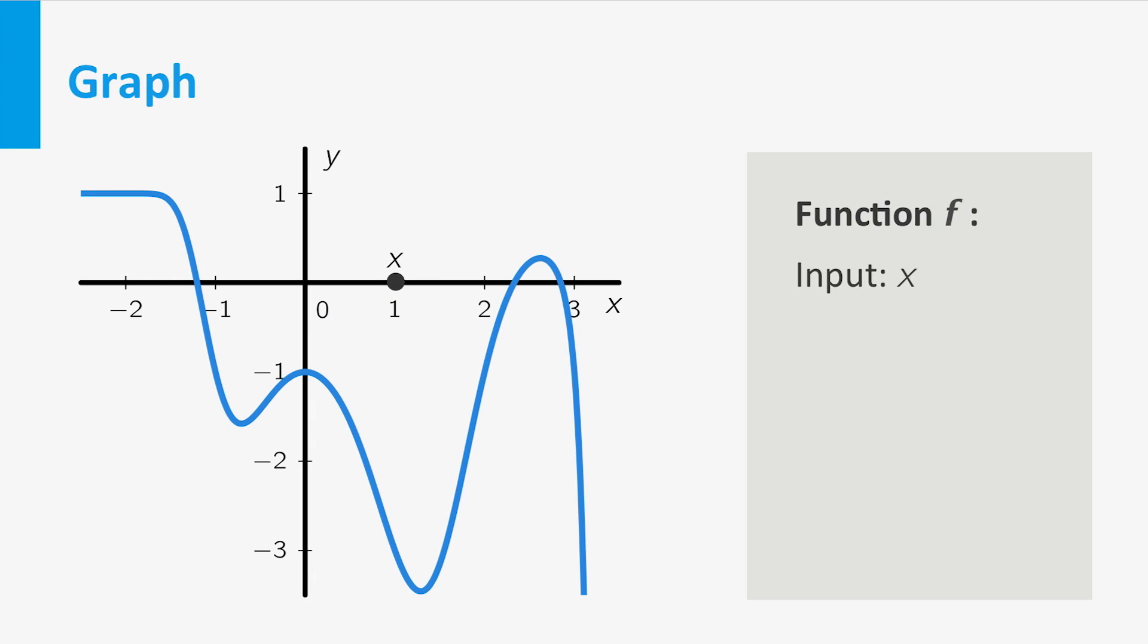The points on the horizontal axis represent the input values. If you pick one, then the corresponding output value is the vertical displacement from that point to the graph. For example, we see from the graph that f(1) equals minus 3.